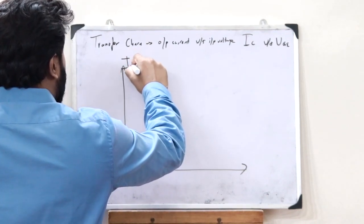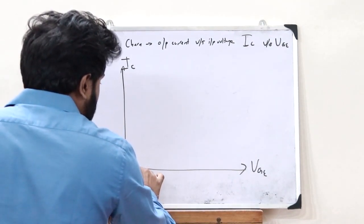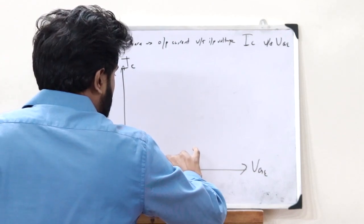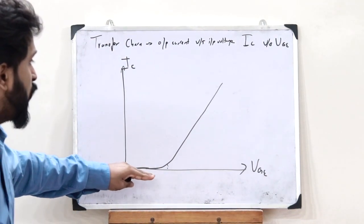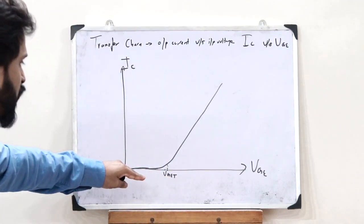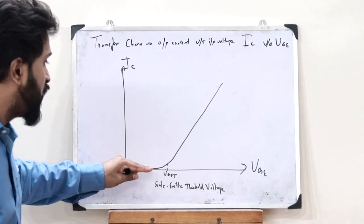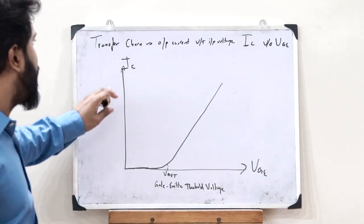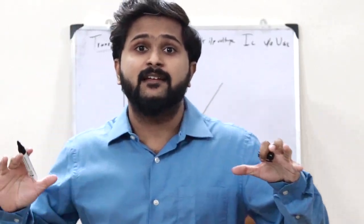Taking IC on the y-axis and VGE along the x-axis, what we observe is that as the voltage value increases, initially there is no increase in current. But after a particular value — the threshold value — as VGE increases, the current also increases. This threshold is referred to as the gate-emitter threshold voltage. When VGE is increased beyond this gate-emitter threshold voltage, current starts flowing through the IGBT. This is the transfer characteristics of the IGBT.